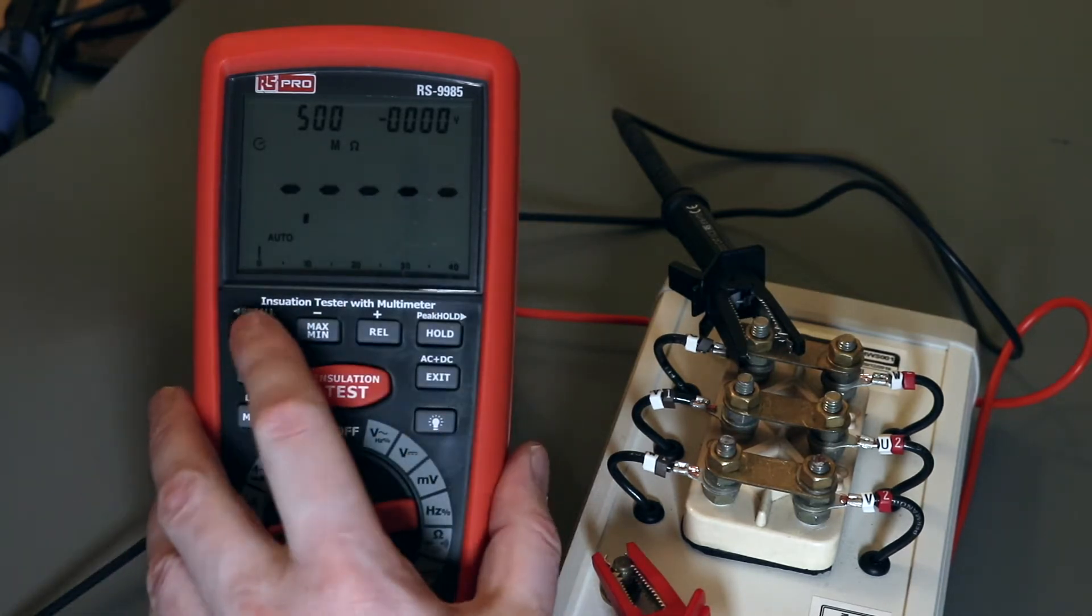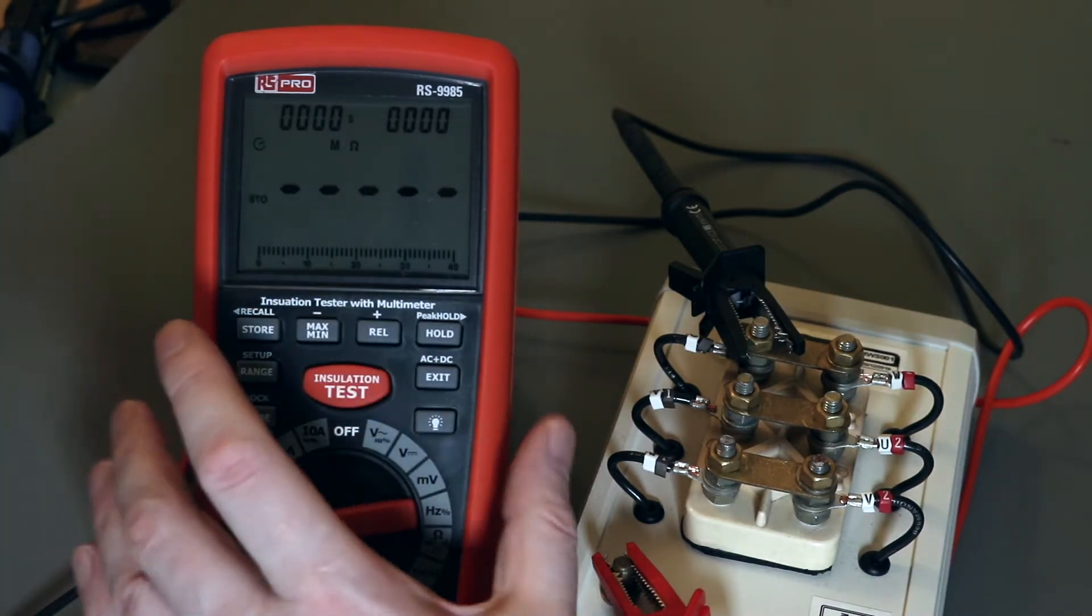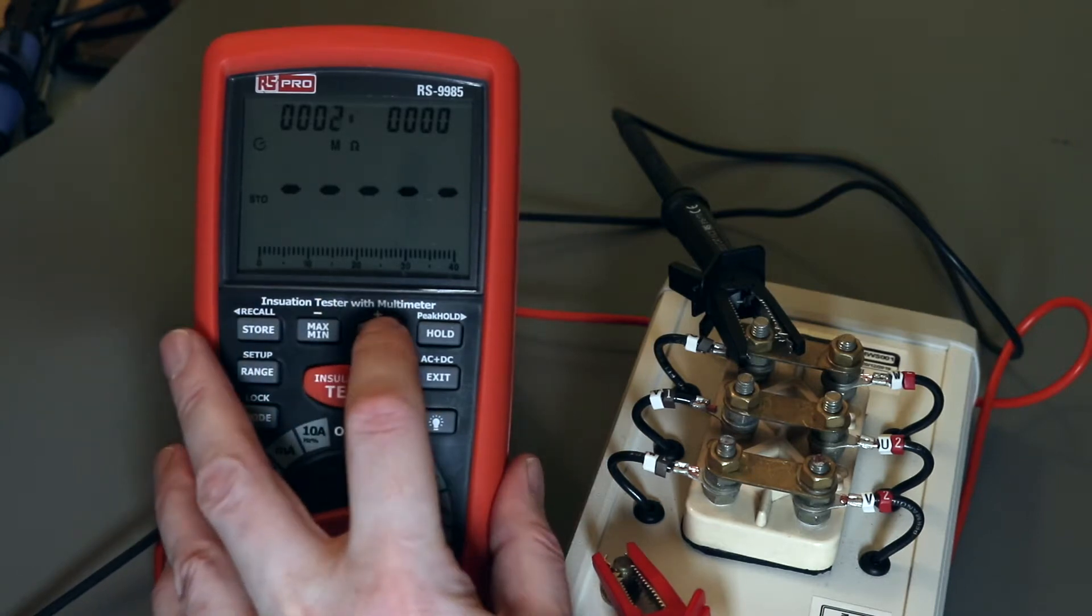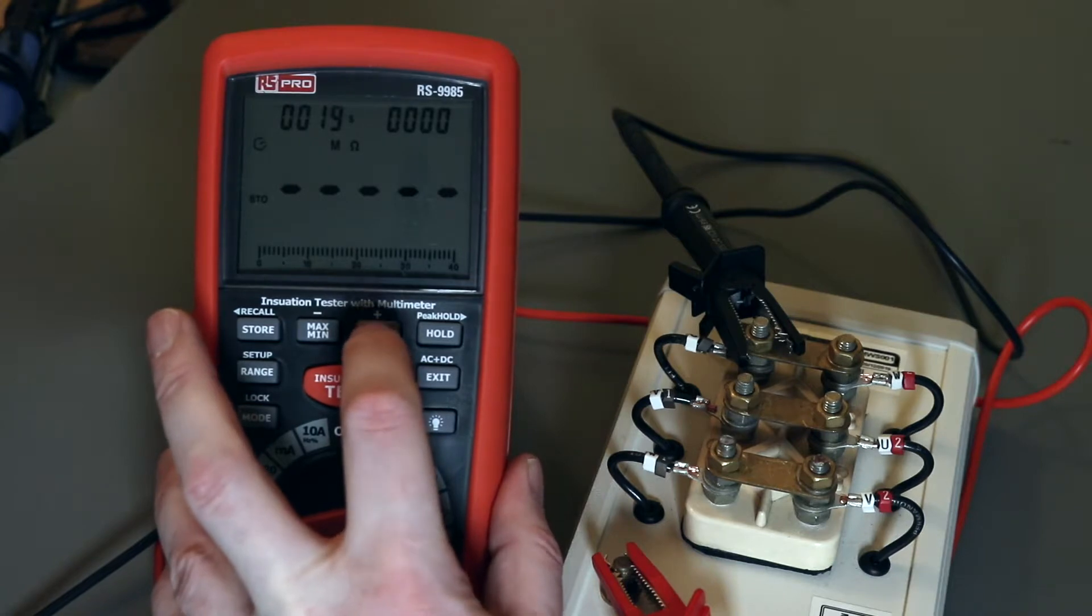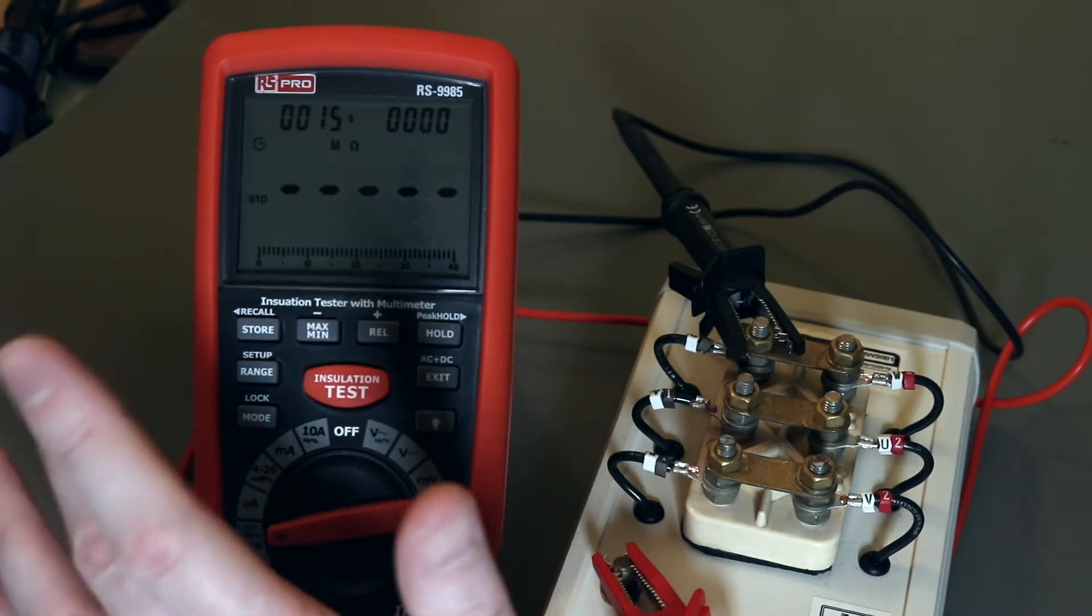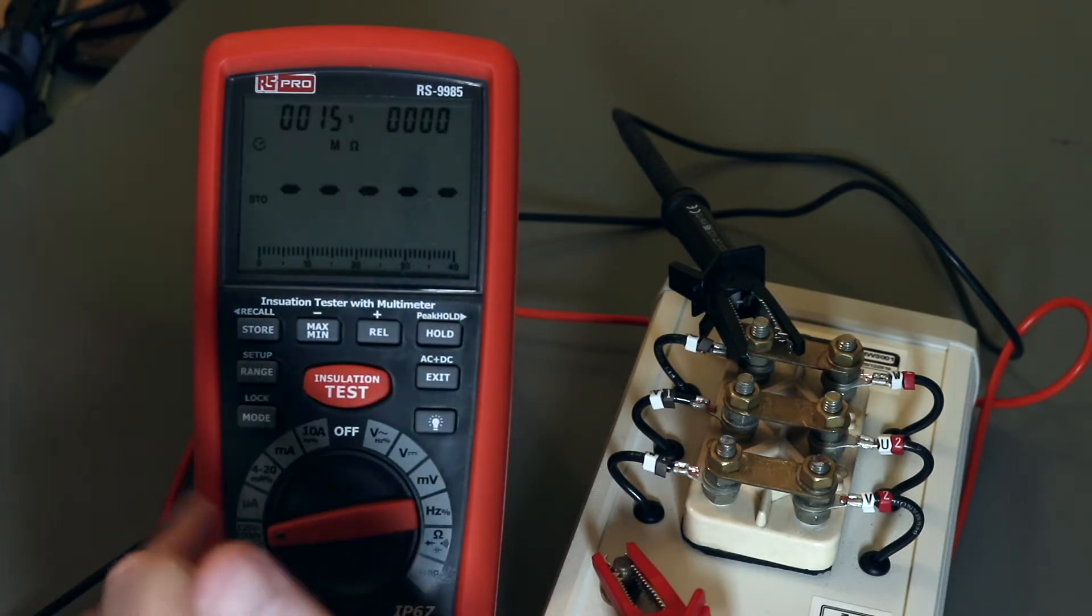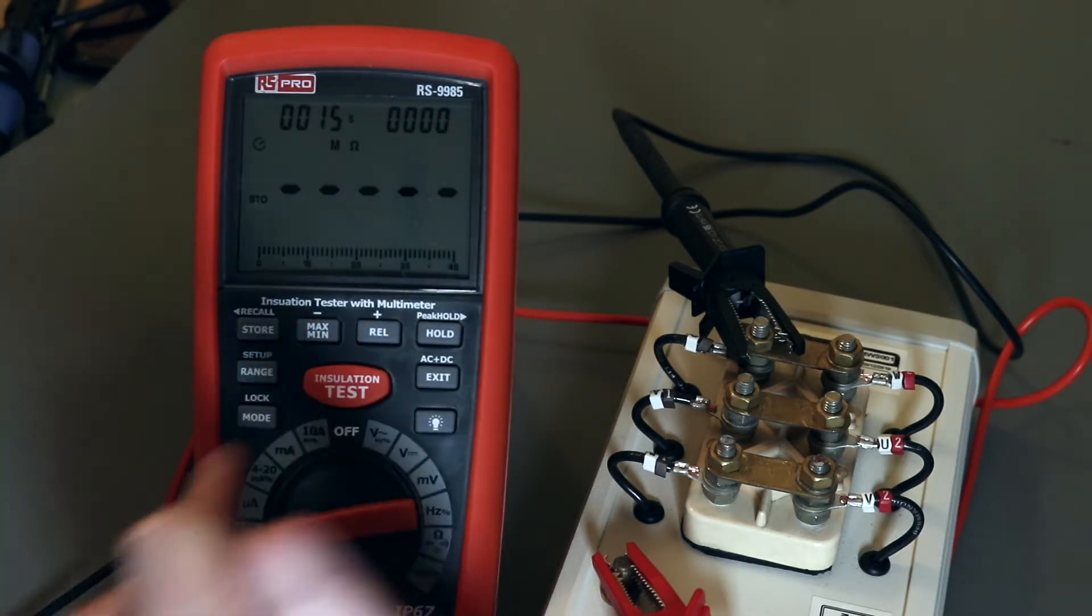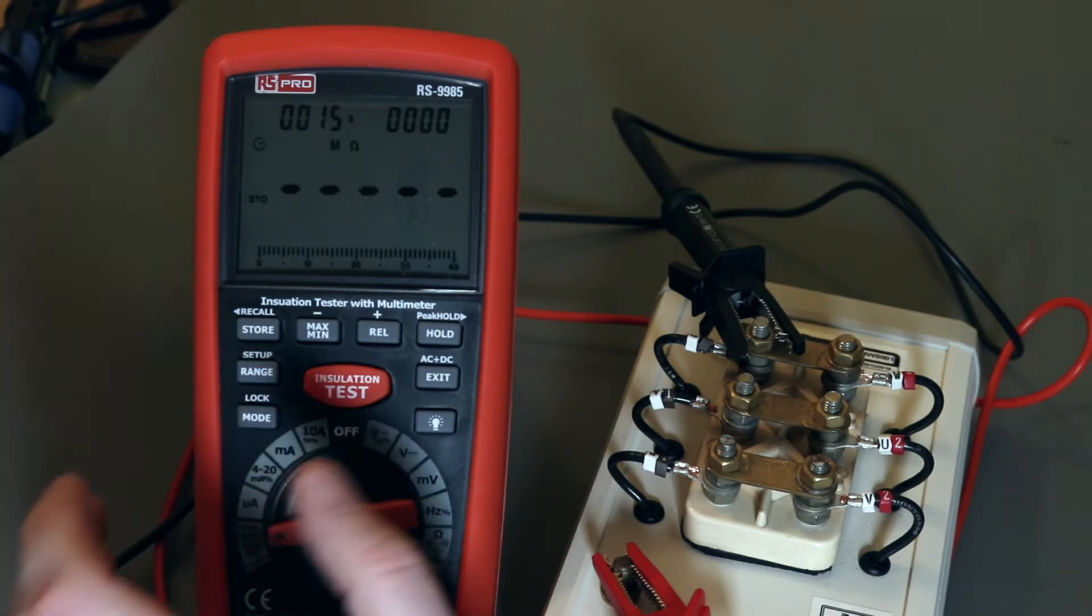So to do that, I'm already in insulation test mode. Go to store. And this time I'm going to set it up to read every 15 seconds. And that's that one there. So the moment I hit the store button again, it's going to start that 15 second count. So I have to hit the store and start the insulation test almost immediately.